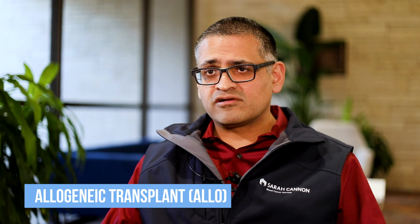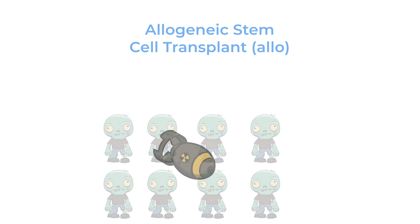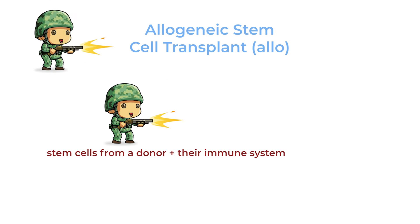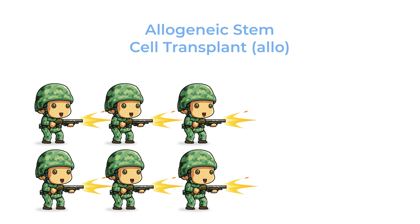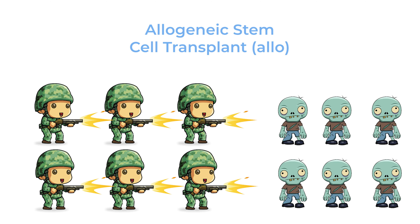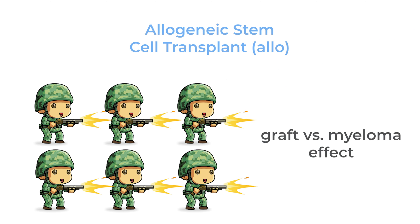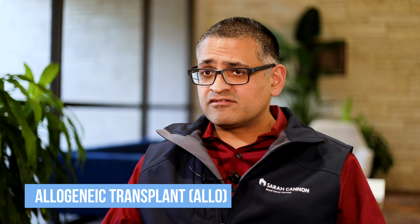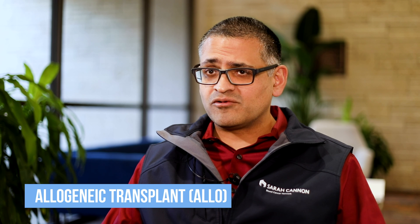Allogeneic transplant works in a different way. We rely on the intensity of chemo to kill myeloma, but when we put in cells from another person you also inherit their immune system. That immune system starts developing in the recipient's body, sees differences on the myeloma cells, recognizes them as foreign tissue, and attacks them. We call that the graft versus myeloma effect, and it can be very powerful — it can eradicate myeloma even when chemotherapy doesn't work anymore.